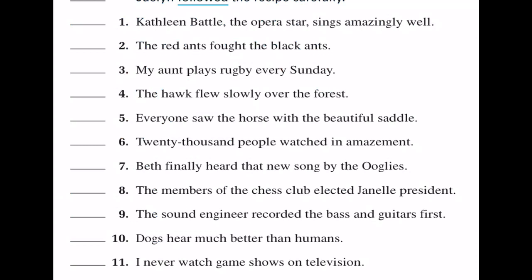Let's go through a few examples. Number one, our action verb is sings. And if this was a transitive action verb, the words that follow would answer what Kathleen Battle sings — the National Anthem, the Opera, whatever. Instead, it answers how by saying amazingly well. That's why this is an intransitive verb.